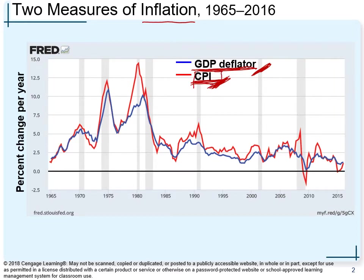On this graph, the red line represents the inflation rate based on the CPI, and the blue line is based on the GDP deflator. We have statistical data starting from year 1965 through year 2015. The general rule of thumb is that inflation based on the GDP deflator and the consumer price index move together.